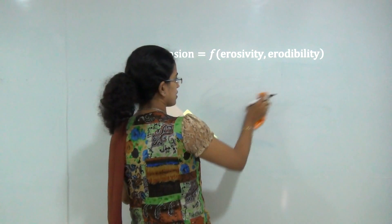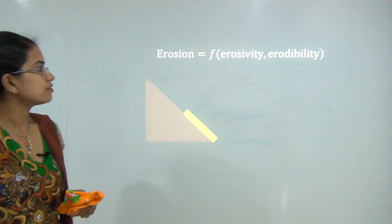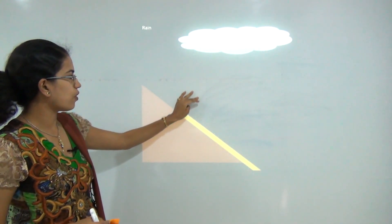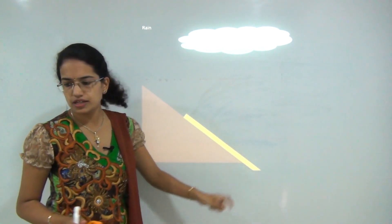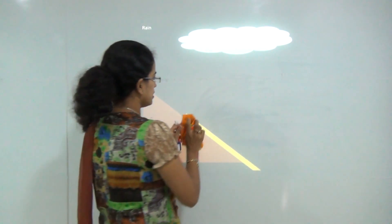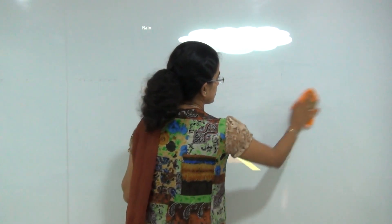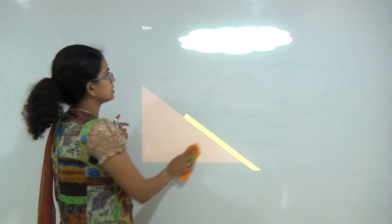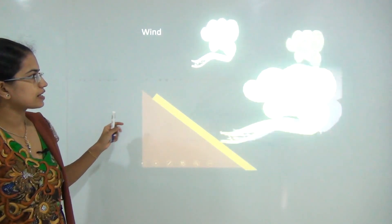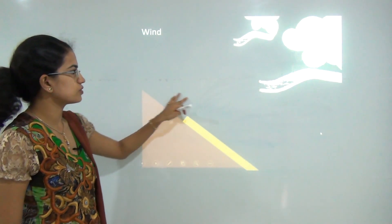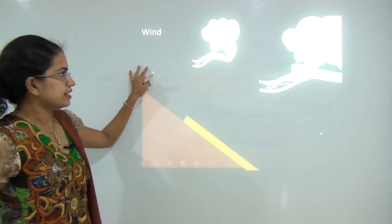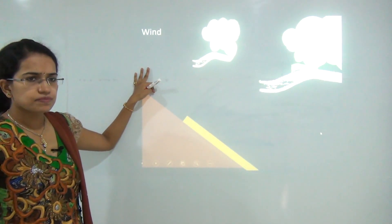There are various factors that affect erosion. The first is rain — when rainfall falls, the top layer of the soil gets eroded away, so rainfall is the first and foremost factor affecting erosion. The next factor is wind: if there is heavy wind blowing through the region, the top layer would get eroded out, and that is another factor that affects erosion.